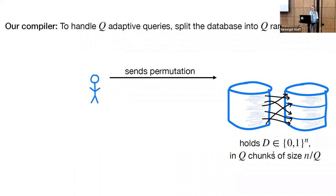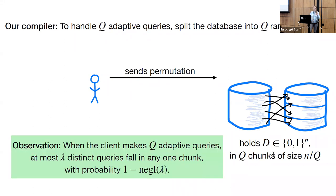Our job is to compile this PIR scheme to support Q adaptive queries. We do this with the following idea: to handle Q adaptive queries, we split the database into Q random chunks. Specifically, our client sends a permutation over the database indices to the server, the server applies this permutation to the database, and chunks the database into Q chunks each of size n/Q. By a balls-and-bins style analysis, when our client makes Q adaptive queries, with overwhelming probability at most λ distinct queries fall into any one chunk. So it is sufficient to build a PIR scheme that lets the client read from each chunk adaptively at most λ times.